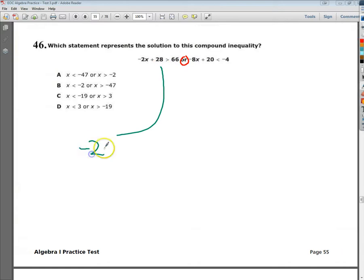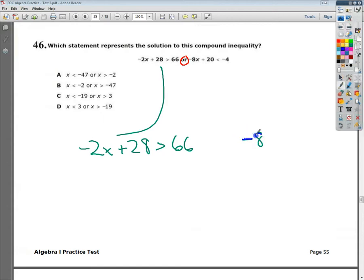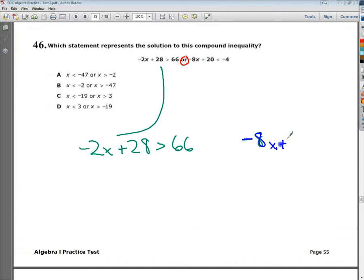I'm going to move this one over here. Negative 2x plus 28 is greater than 66. And on the other side, negative 8x—I guess I could do it in a different color, that would make a visual point. Negative 8x plus 20 is less than negative 4.